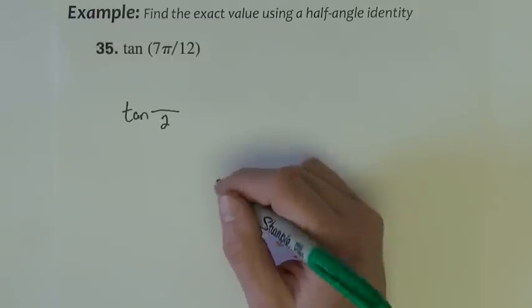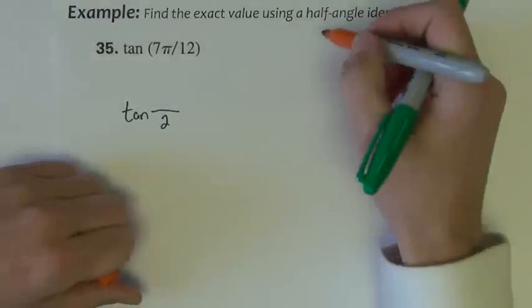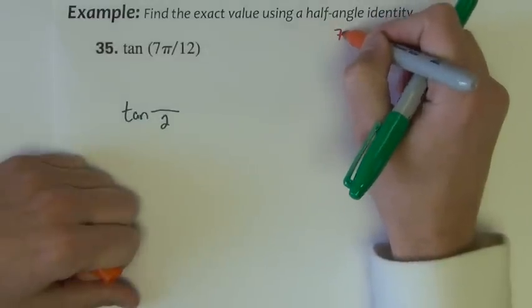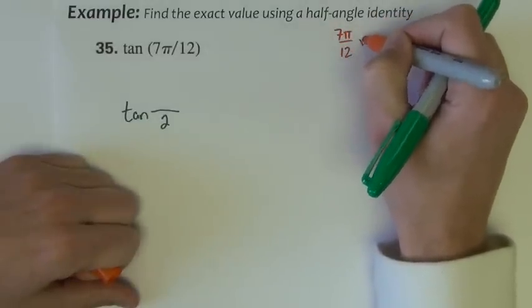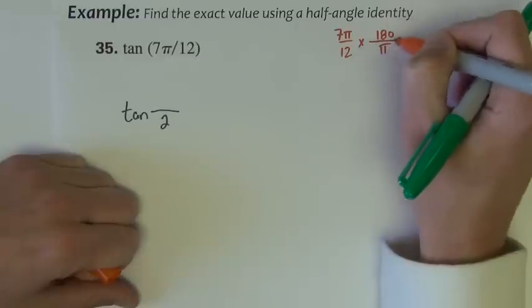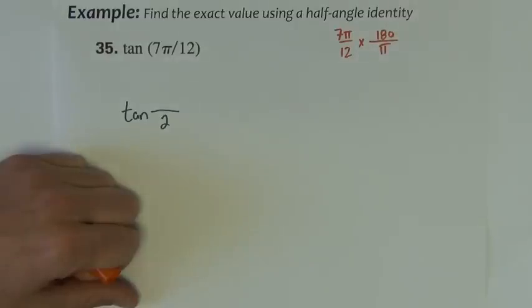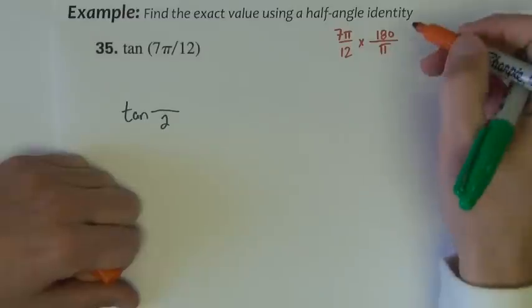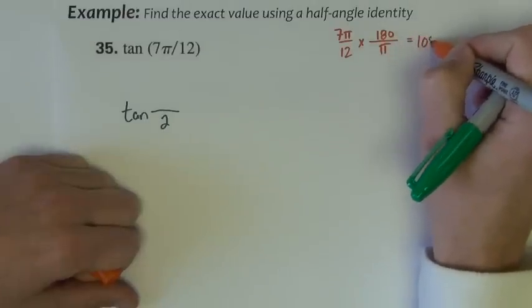I don't like 7 pi over 12, we've seen this before. So I'm going to take 7 pi over 12 and convert it into a degree. That would be 7 times 180 divided by 12 is equal to 105 degrees.